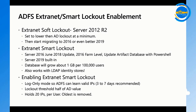To enable smart lockout, first turn it on in log-only mode for three to seven days so ADFS can learn valid IP addresses. If you're under attack, run it for at least 24 hours first. The lockout threshold should be about half the Active Directory value. The system stores 20 IPs per user; when a 21st IP appears, the oldest is removed from the database.